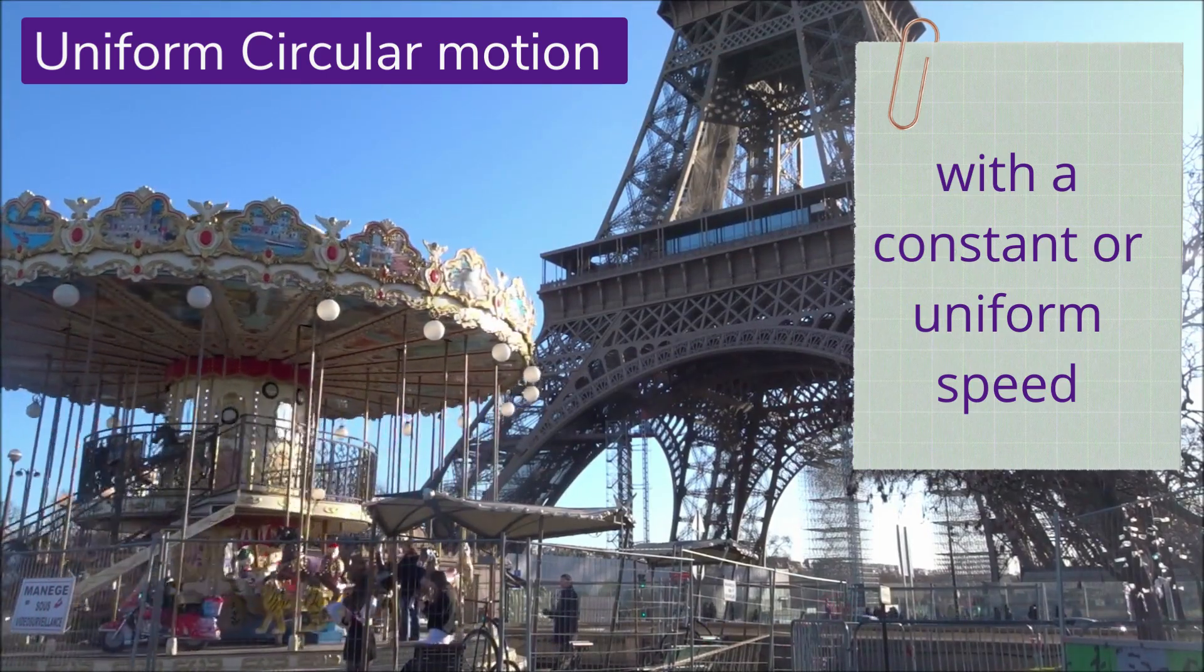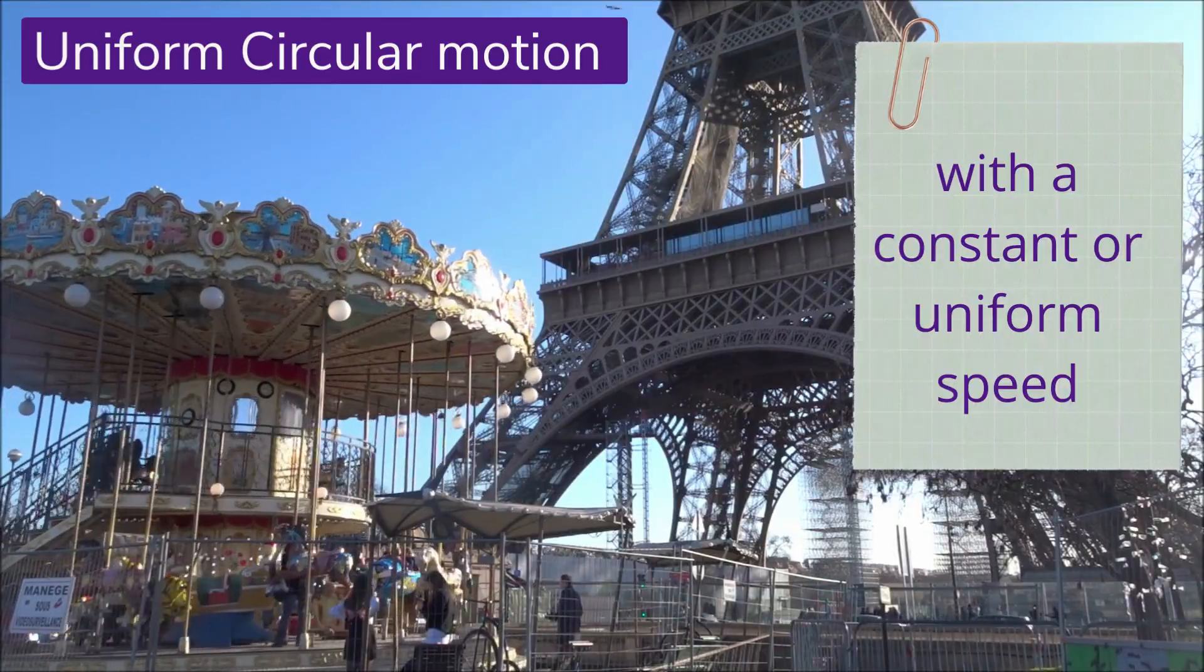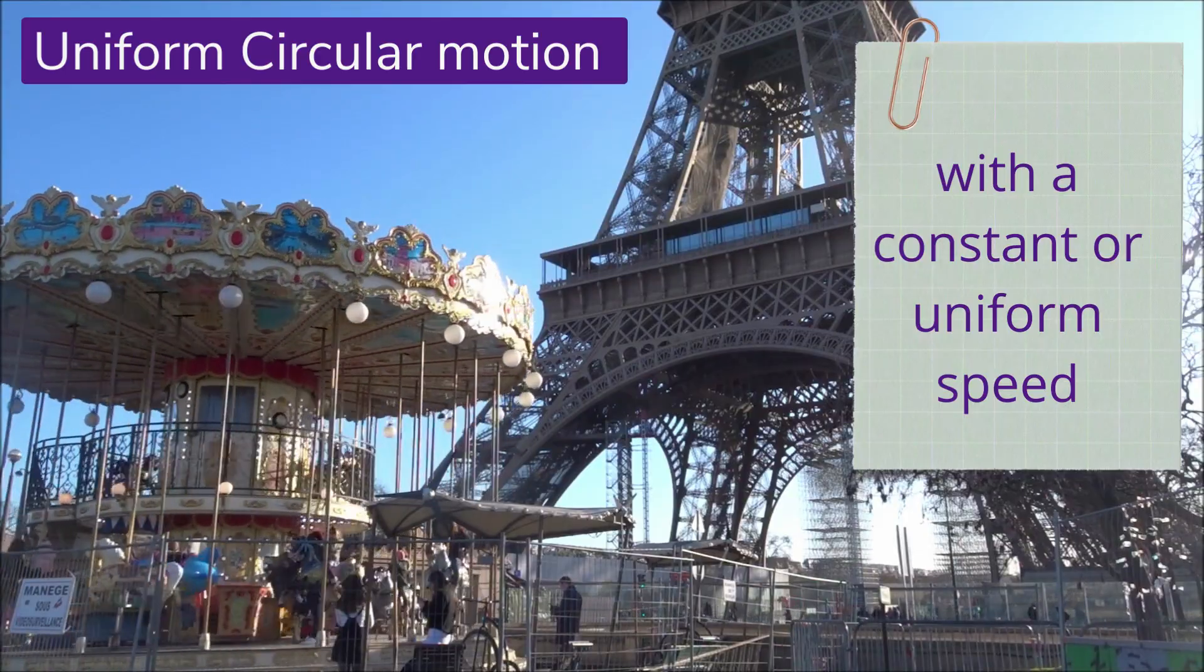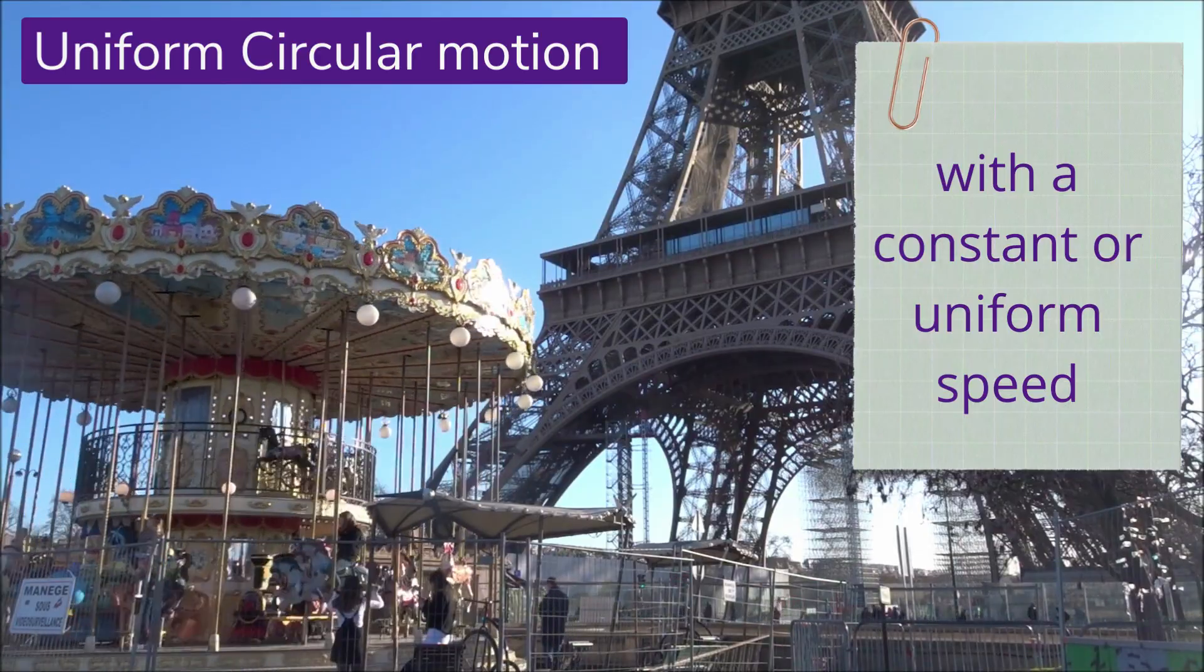When a body moves in a circular path with a constant or uniform speed, the motion is called uniform circular motion.